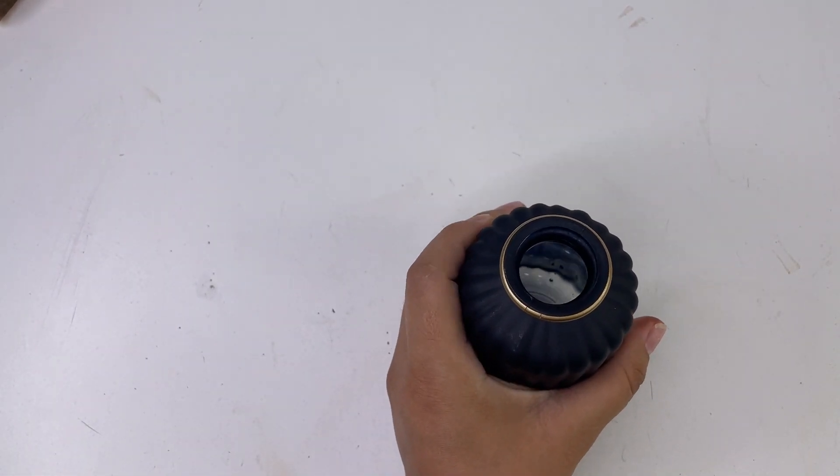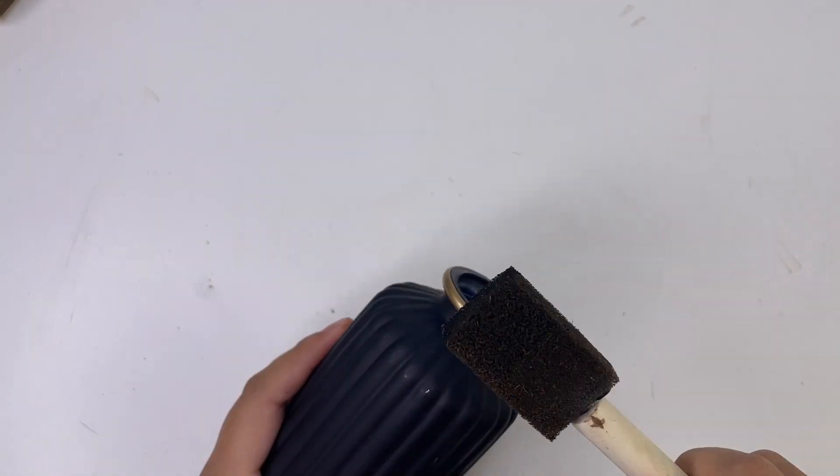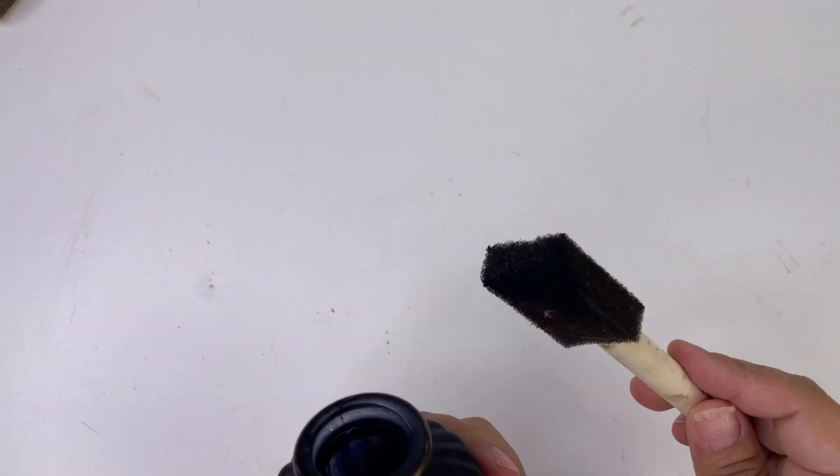Every tray needs a planter, so I'm going to make a little planter using this Dollar Tree jar. I don't like the gold part so I am going to cover that using some black paint.